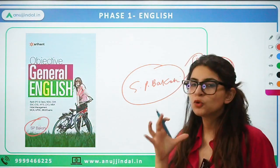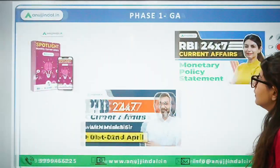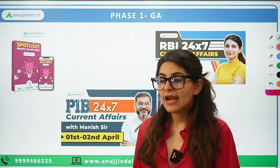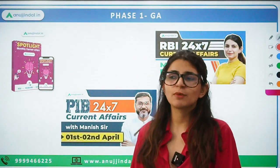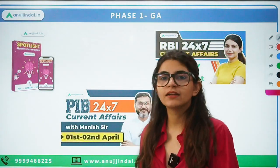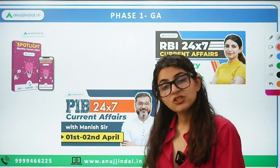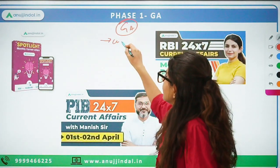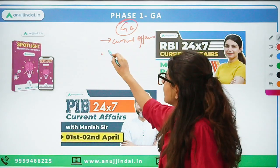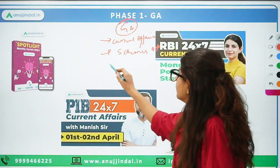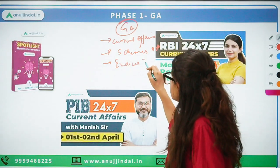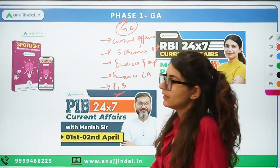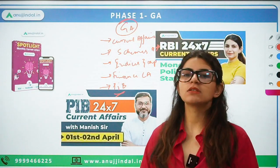The most important section is GA — 80 questions are asked from it, and they are not easy questions. Since 2021, RBI has started giving difficult questions in the GA section. The kind of questions asked include basic current affairs, current happenings, government schemes, indices and reports, finance current affairs, and PIB — Press Information Bureau. PIB covers what the government is doing, MOUs signed, any collaborations, delegates visiting India, events under any ministry.